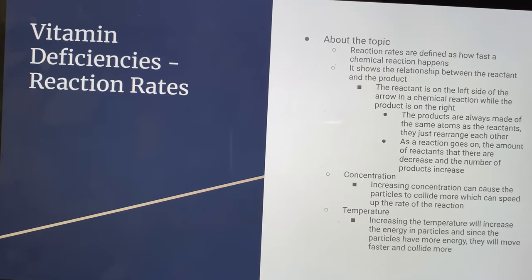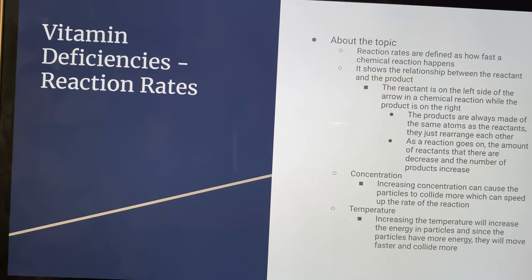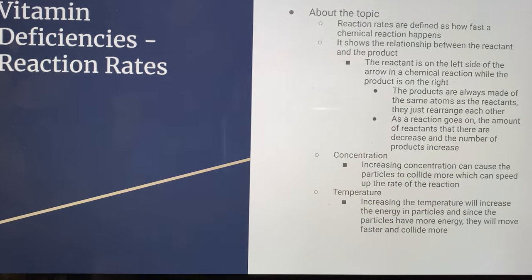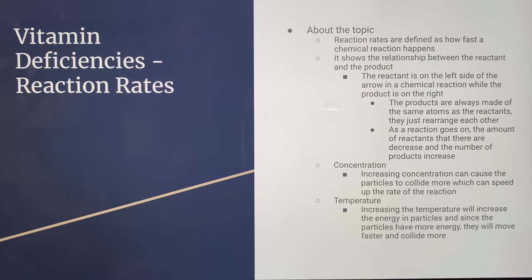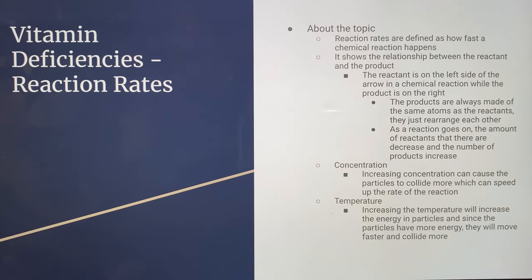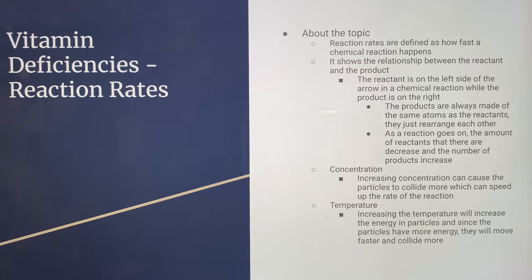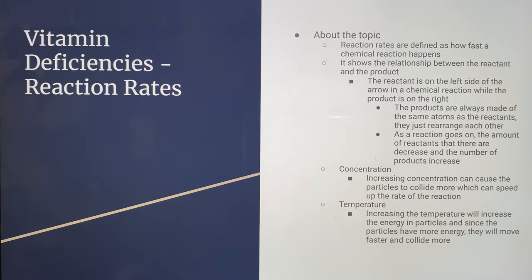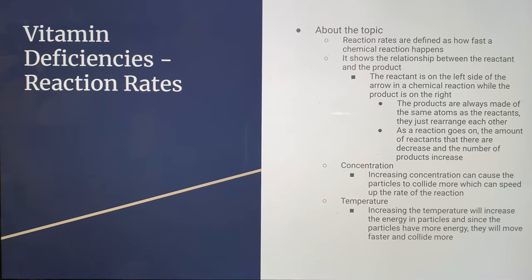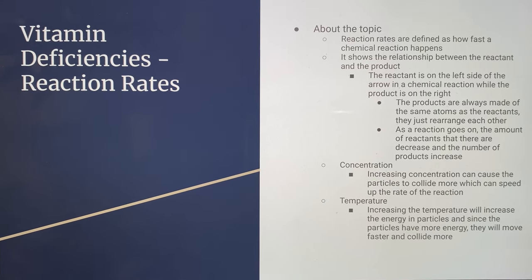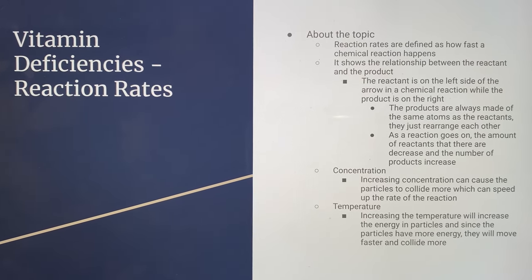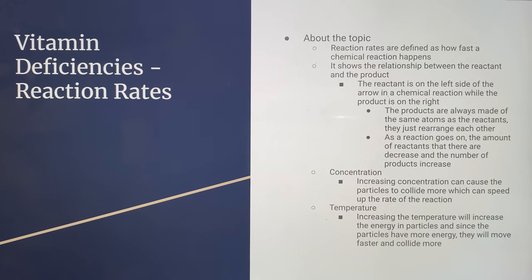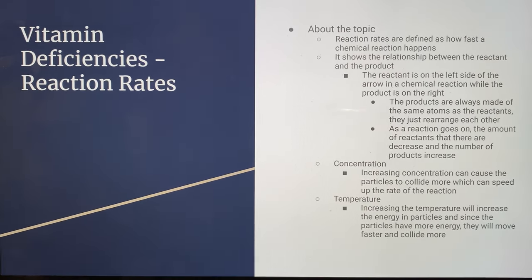As a reaction goes on, the amount of reactants will decrease and the number of products will increase, showing that the reaction is happening. Increasing the concentration of a substance can cause particles to collide more, which speeds up the rate of reaction. The same thing can happen with temperature — increasing the temperature increases energy, making particles move faster and collide more, also increasing the rate of reaction.